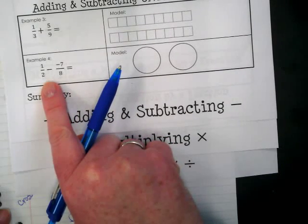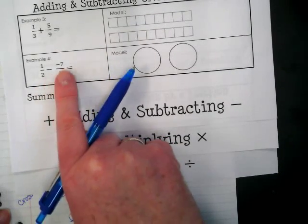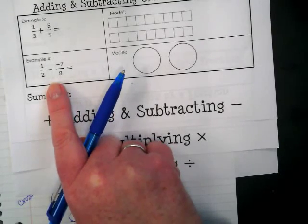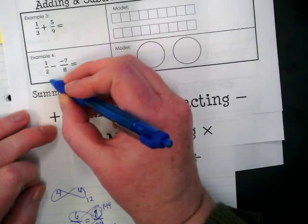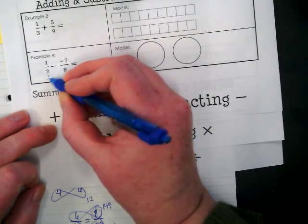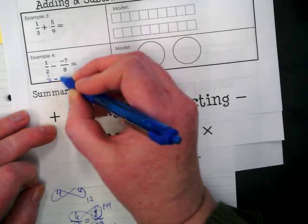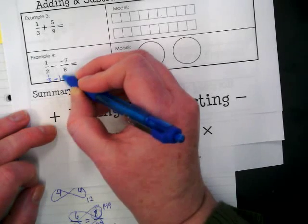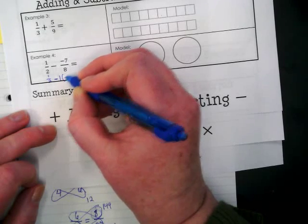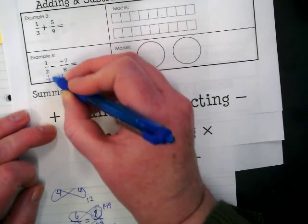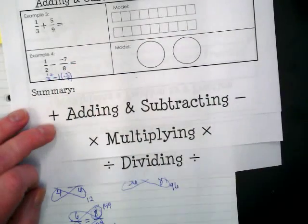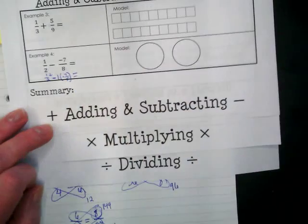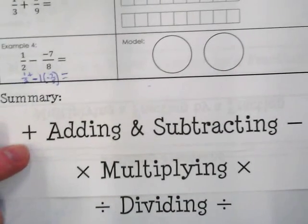And then try the same down here with one half minus negative seven eighths. Don't forget this subtraction really means that there's an invisible plus sign here. I'm going to rewrite this as one half minus one times negative seven over eight because there's a plus sign right there. Remember whenever we have those subtraction problems with another subtraction we're really multiplying a negative one.